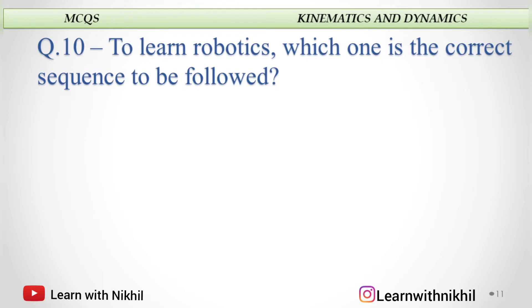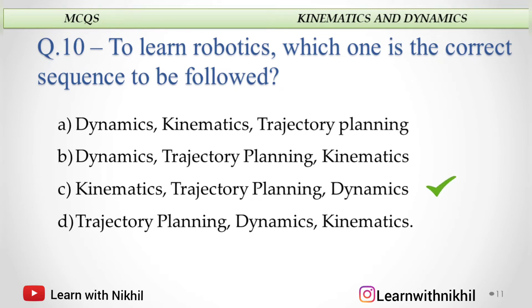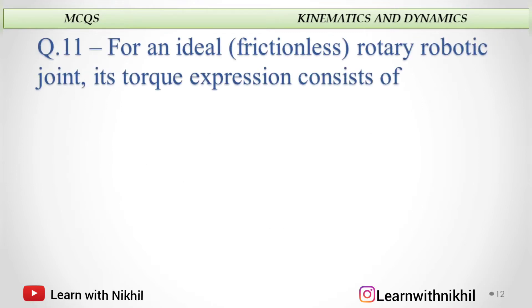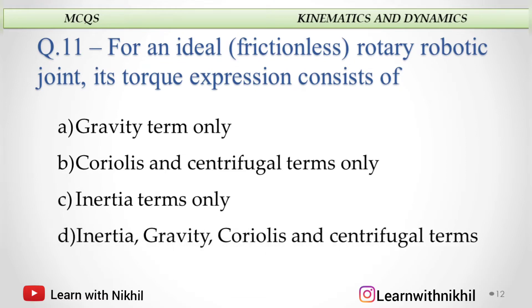To learn robotics, the correct sequence to follow is: first find the kinematics, then do trajectory planning, then dynamics — and then the whole robot structure is ready. For an ideal frictionless rotary robotic joint, a torque expression consists of inertia, gravity, Coriolis, and centrifugal terms. The answer is the last option covering all these terms.